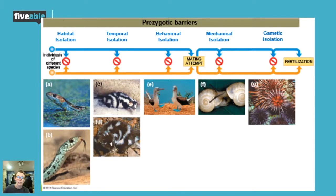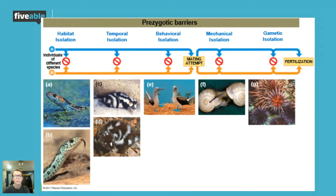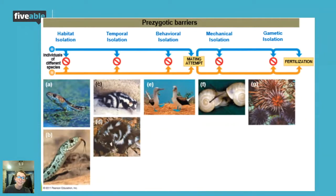Next is temporal isolation — another pre-zygotic barrier. Where habitat isolation is like a long-distance relationship with no babies being made, temporal isolation is all about timing. In this example, two skunks mate during different seasons — one mates in the fall and one in the spring. This keeps their gene pools apart and prevents gene flow between them because they're simply not mating at the same time. It's like saying 'the timing's just not right.'